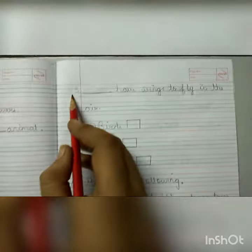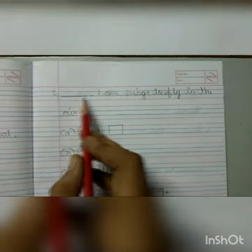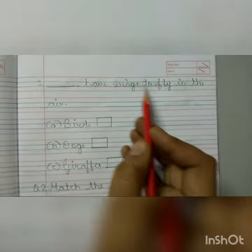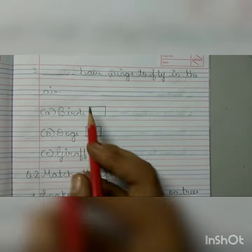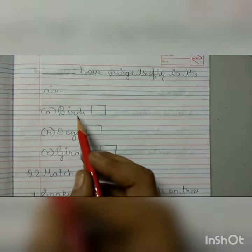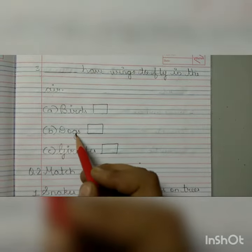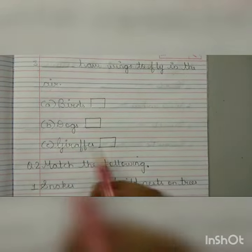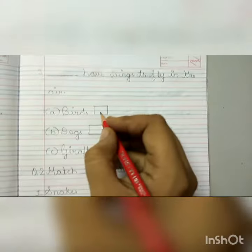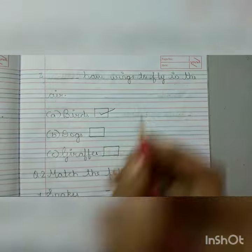Number 3. Dash have wings to fly in the air. Options are birds, dogs, giraffes. The answer is birds.